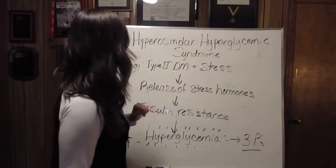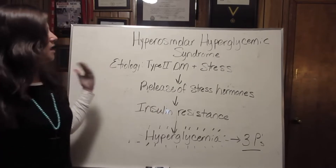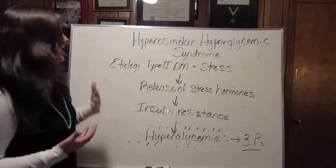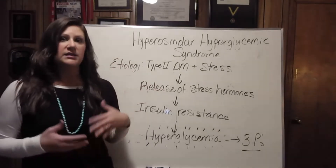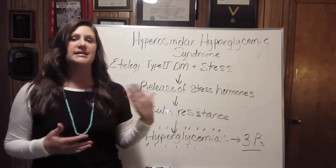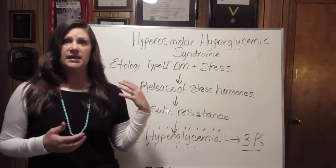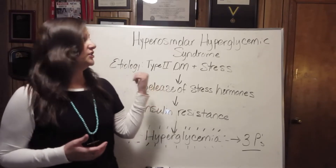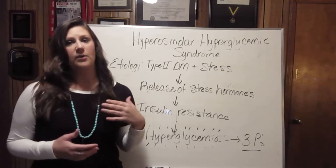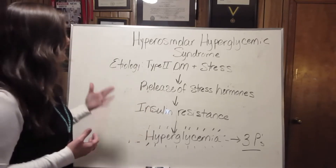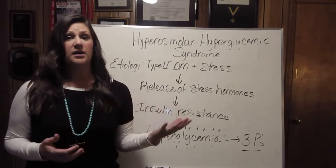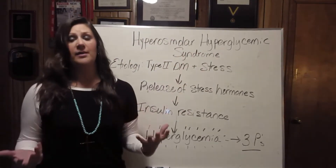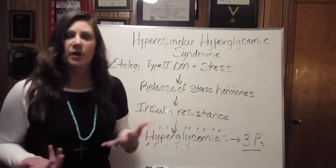When I talk about the pathophysiology, we start with etiology. Type 2 diabetics get HHS. DKA is the emergency complication for type 1 diabetics; HHS is the emergency complication for type 2 diabetics. You have a type 2 diabetic, either diagnosed or undiagnosed. Some kind of stress happens to them, and just like with DKA, most often it's an illness.